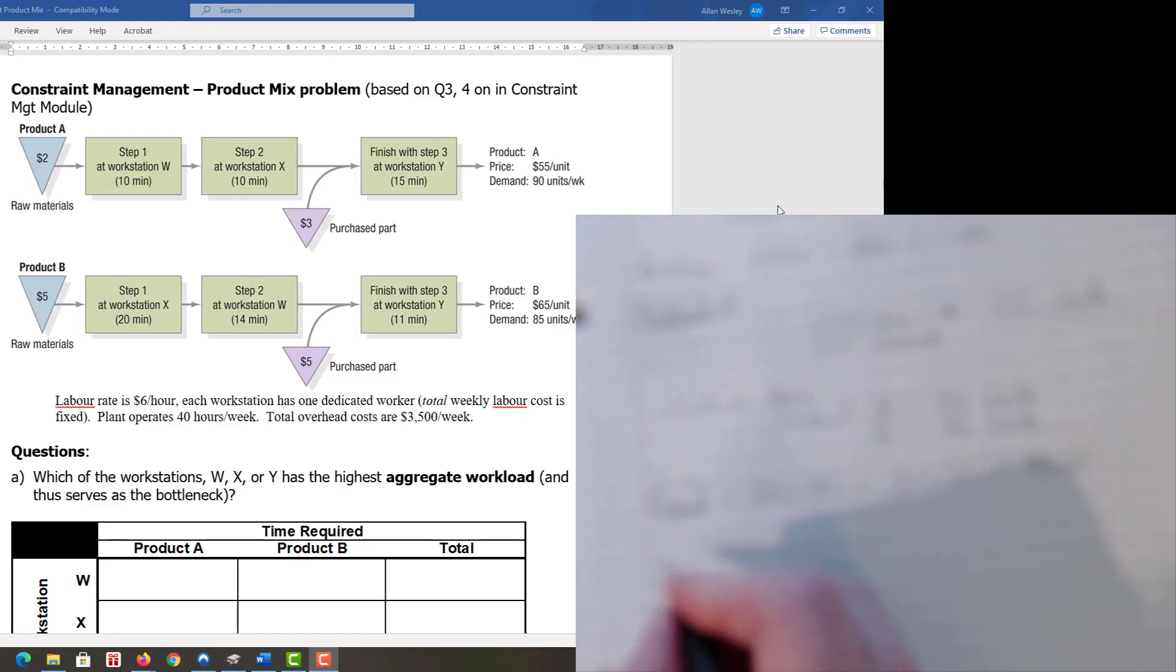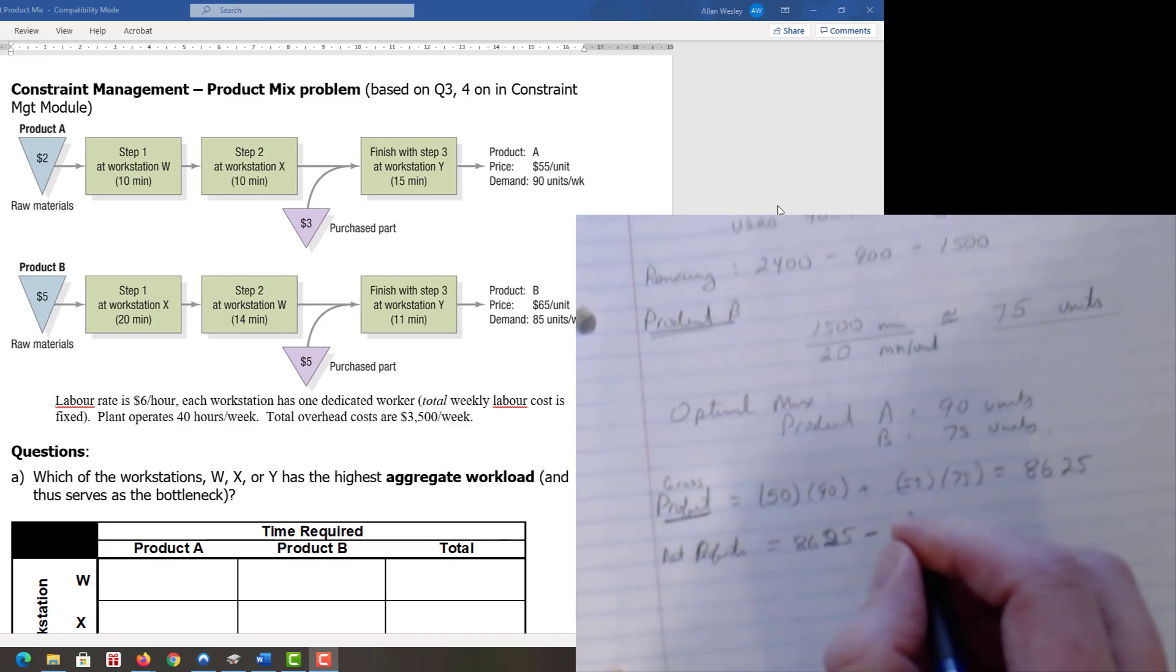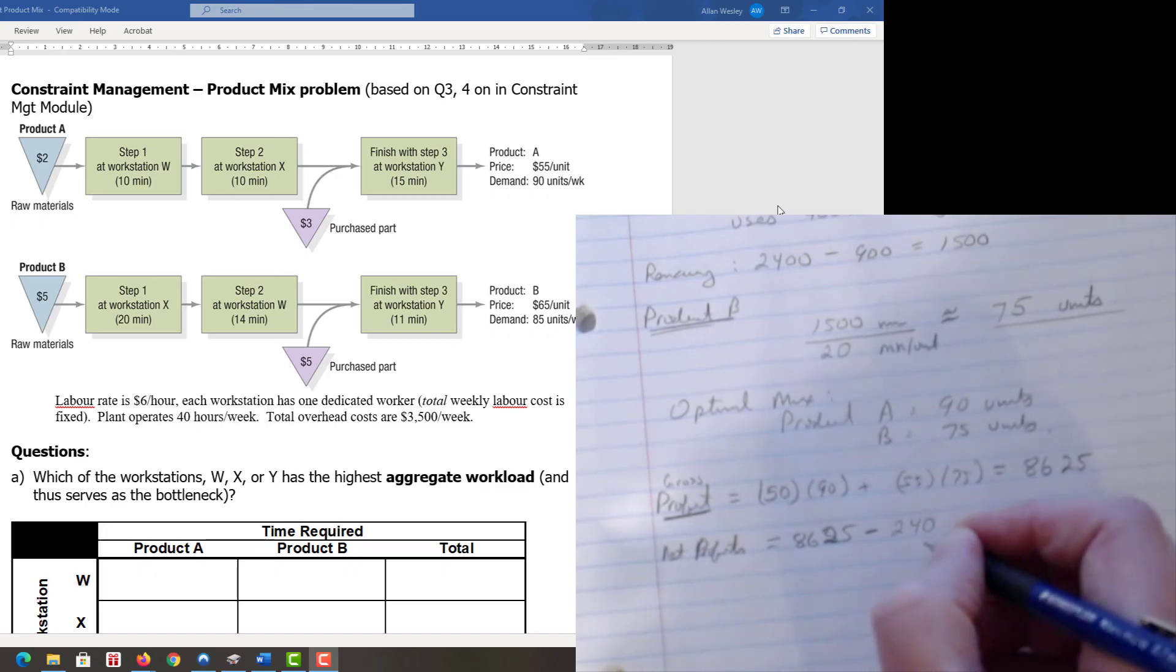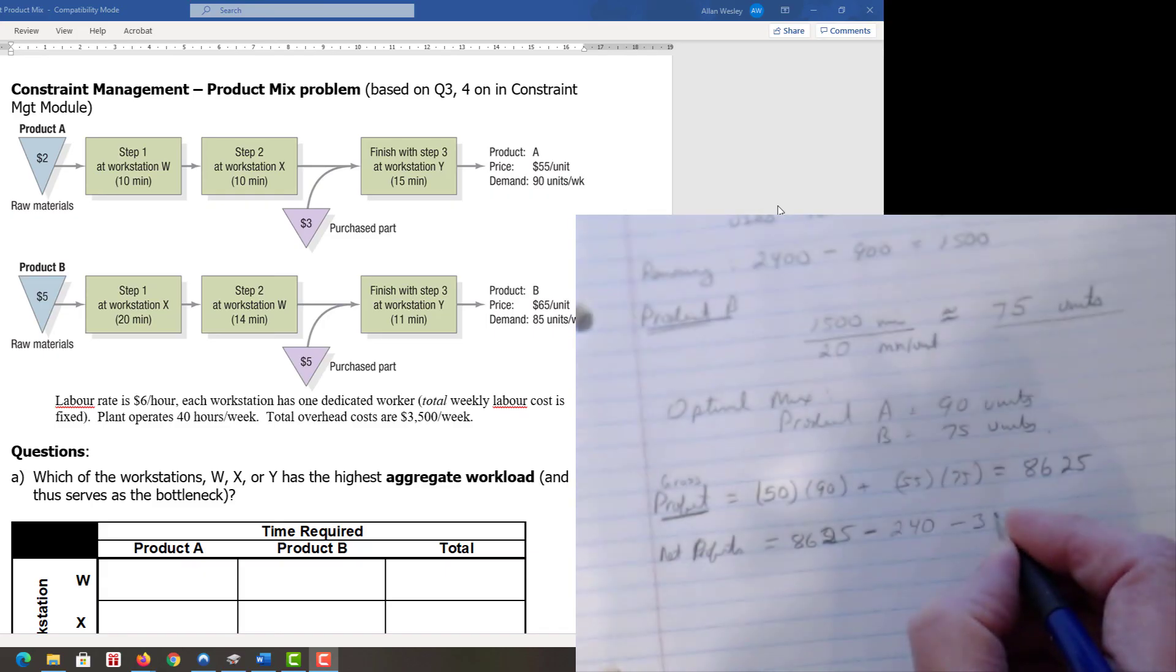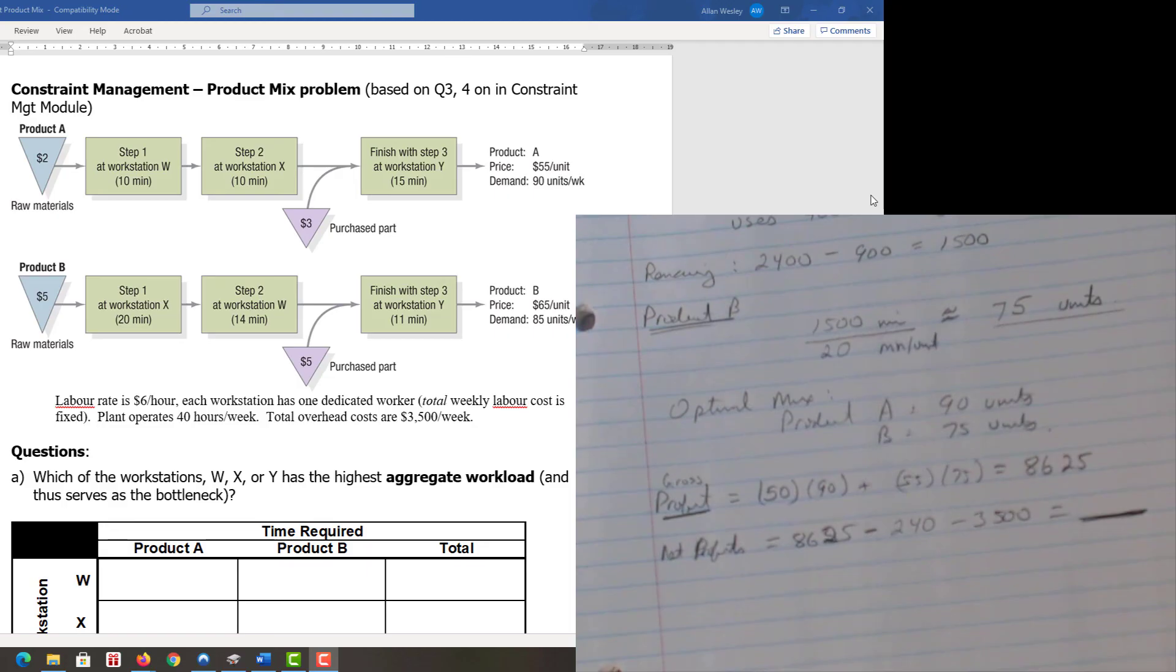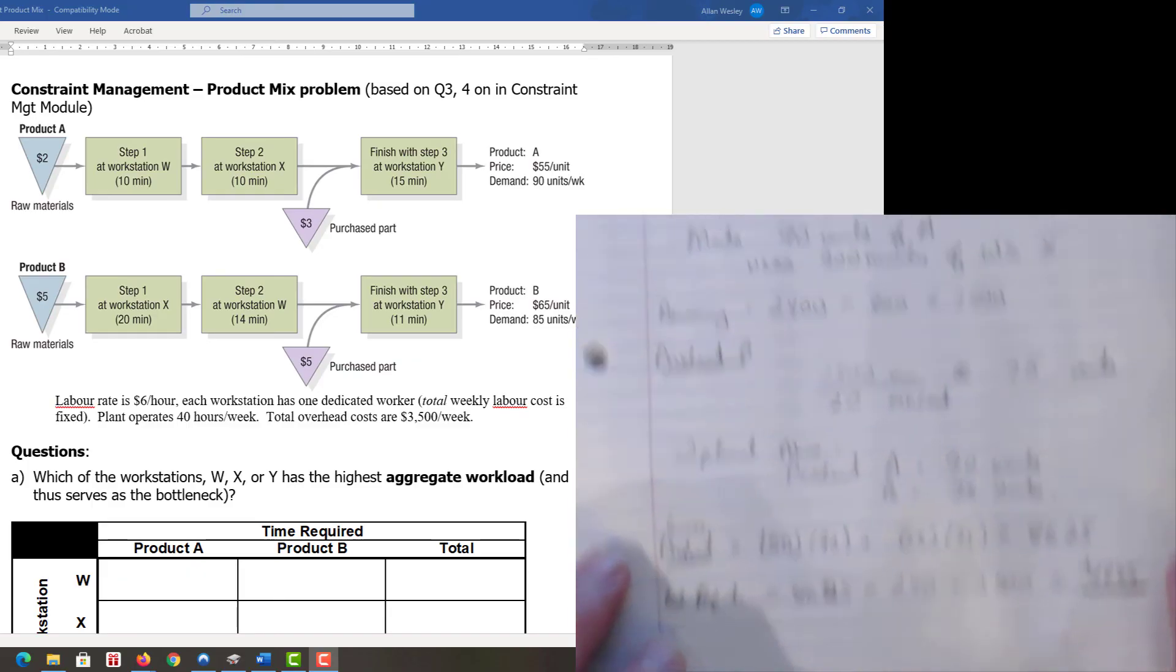Next step, to find net profit, we take that 8,625 and start subtracting overhead. Labor is six dollars per hour times 40 hours, which is 240 dollars in labor costs, plus 3,500 in overhead. The remainder is 4,885 dollars.